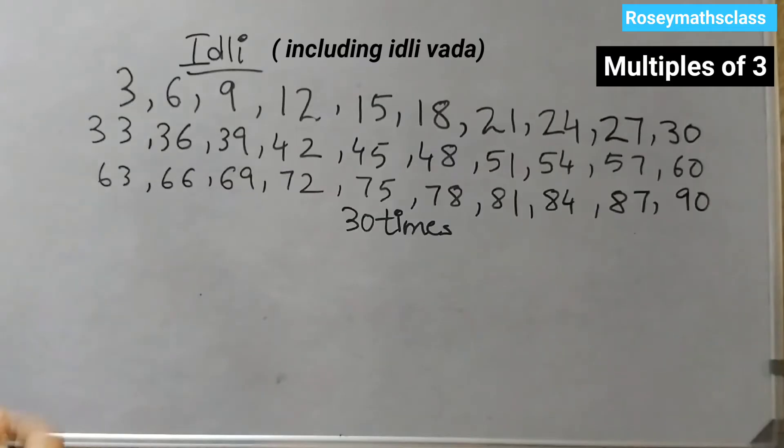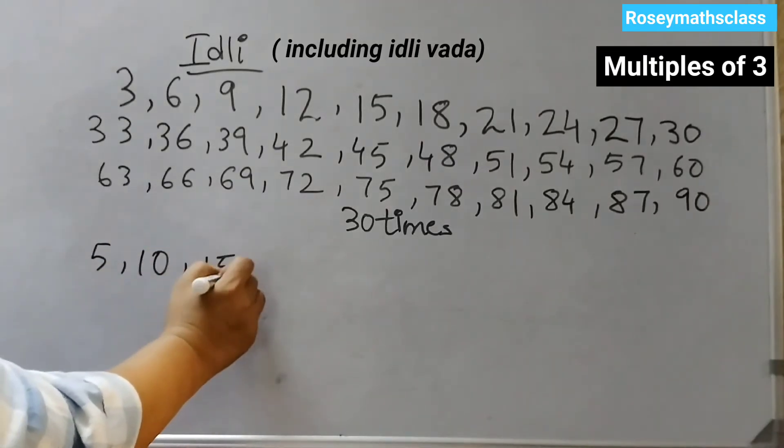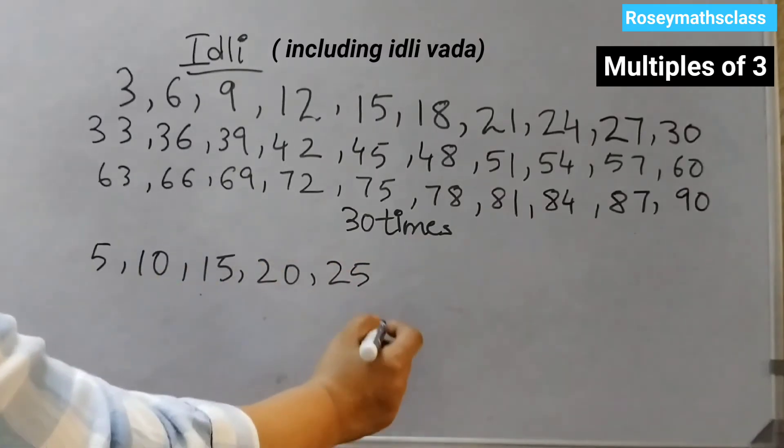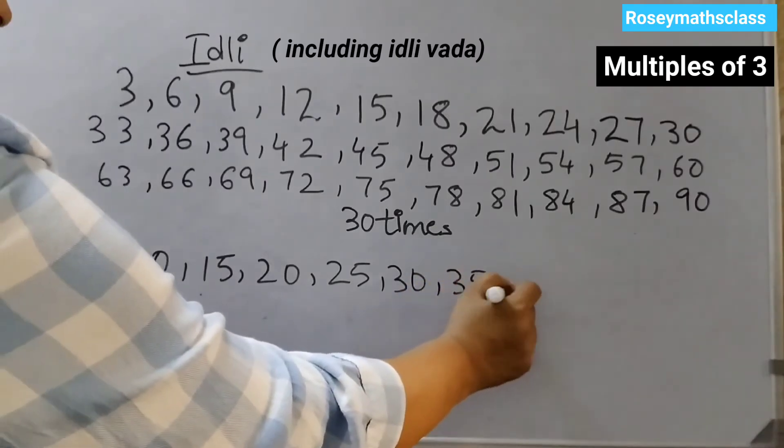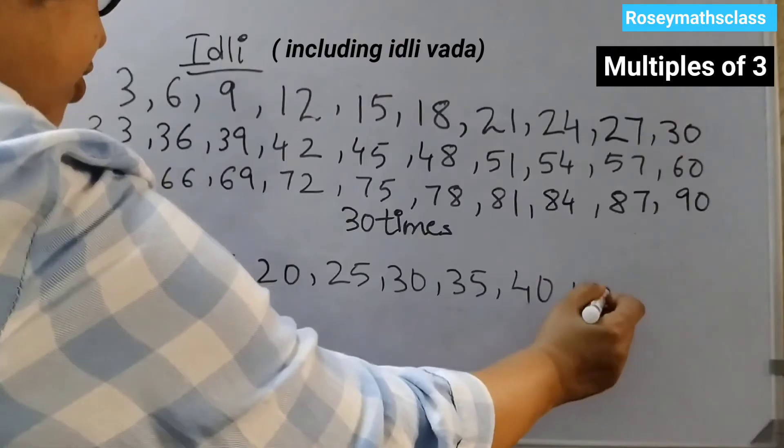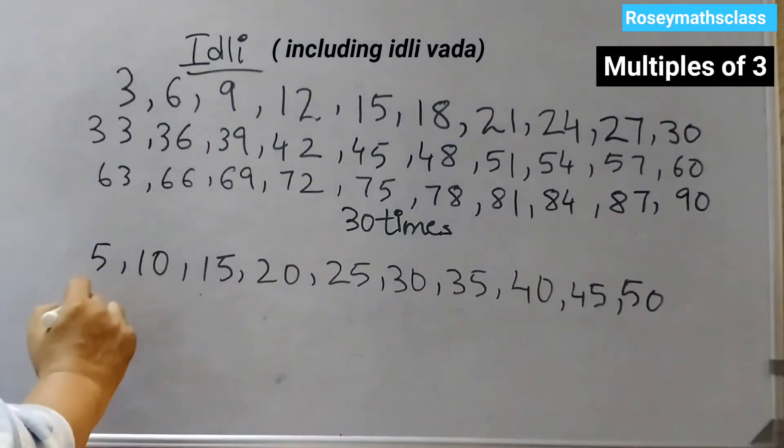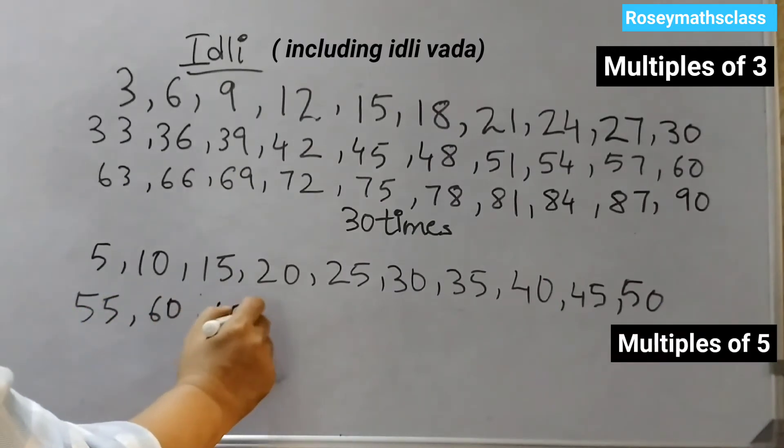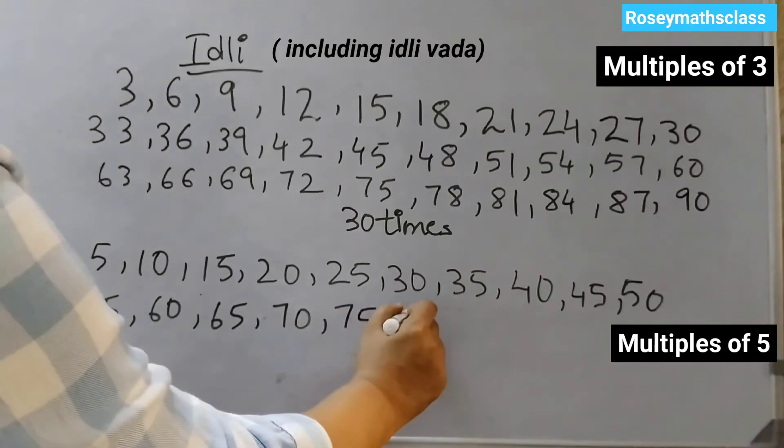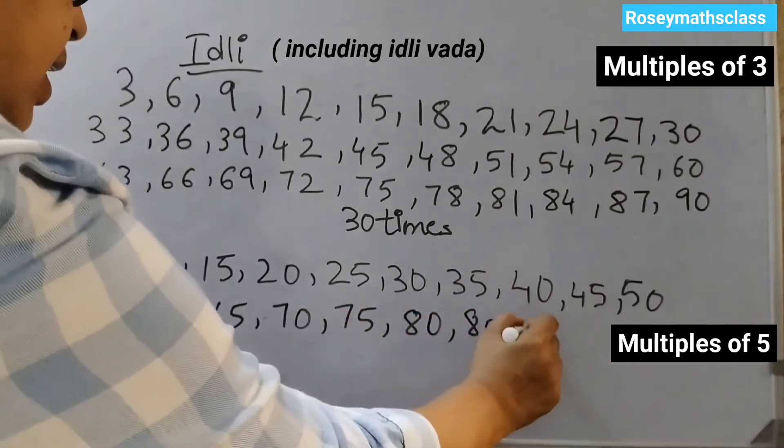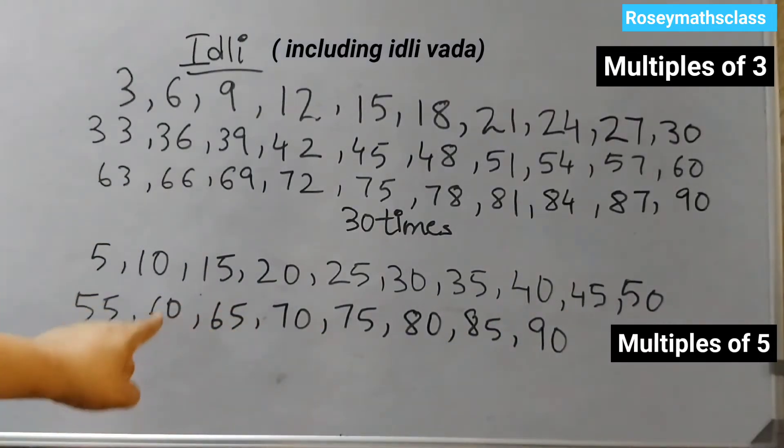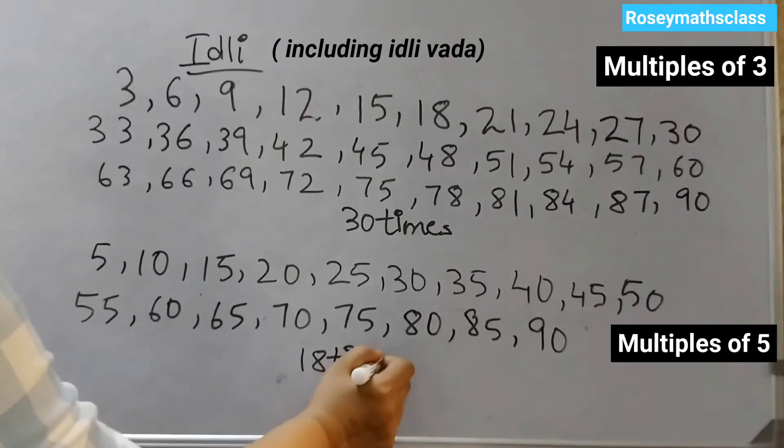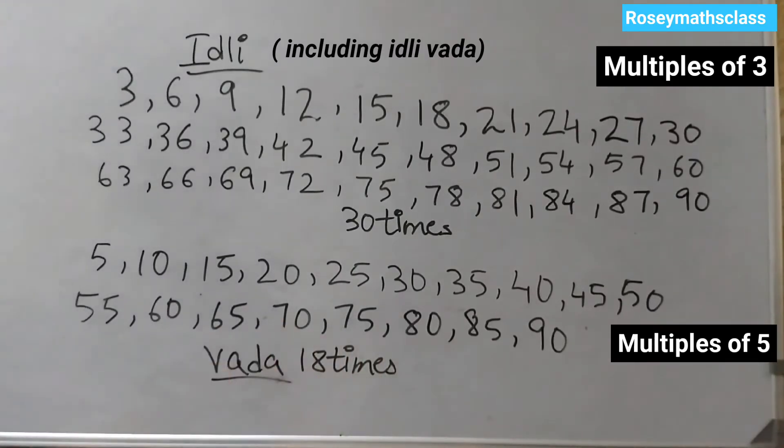Now we will see how many times they say Vada. For that we need the multiples of 5. So 5, 10, 15, 20, 25, this is table of 5, 30, 35, 40, 45, 50, 55, 60, 65, 70, 75, 80, 85, 90. If you count the numbers, there are 18 multiples of 5. They would say 18 times Vada. This is the answer for the second part of the question.